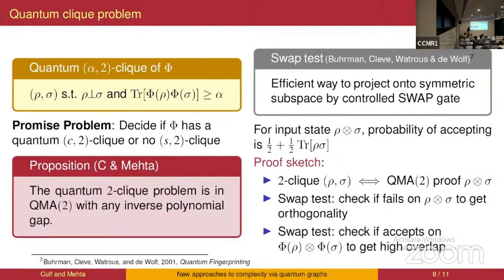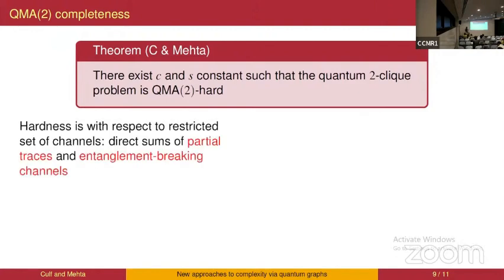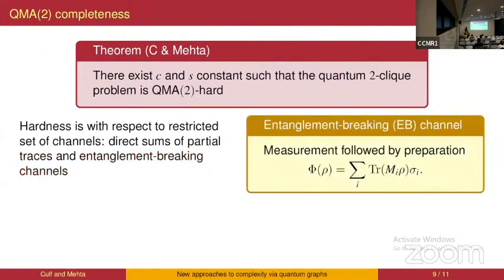QMA2 is a potentially very large class, so it's not that interesting to just show containment. The main result is that this problem is also hard for QMA2, making it QMA2-complete. The hardness proof makes use of the structure of cliques for partial trace channels, which will allow us to guarantee separability of the states in the clique. We also use cliques of entanglement breaking channels to guarantee certain properties of the QMA2 verification circuit.